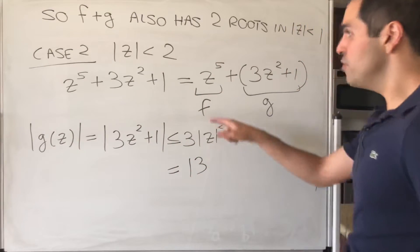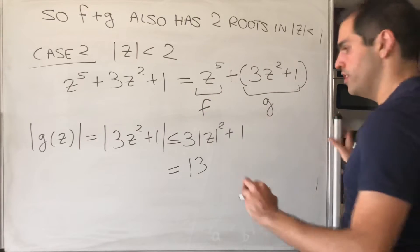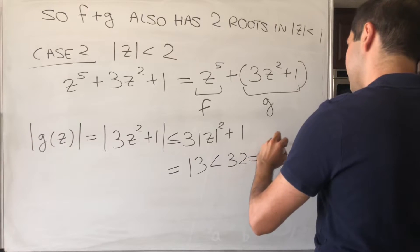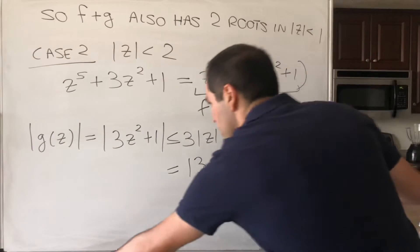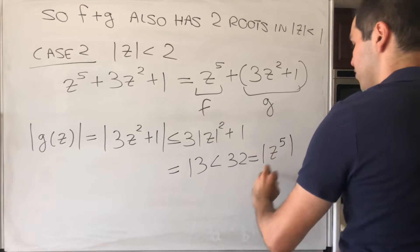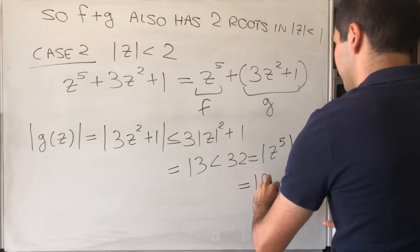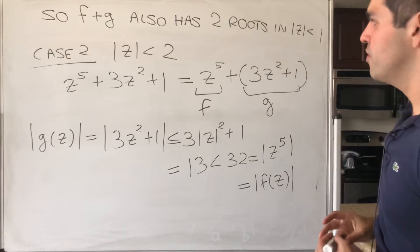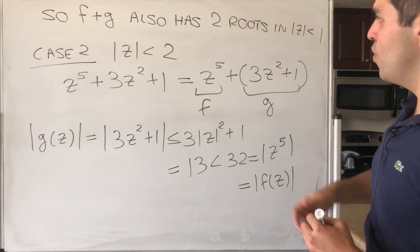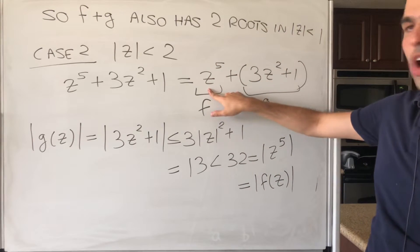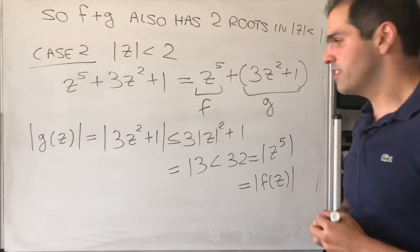Well, it is a big number, but it's smaller than 32, which is the absolute value of z^5. z^5, which is absolute value of F(z). So you see, this function is clearly bigger than this one in terms of absolute value. So again, the number of roots of this perturbation is just the number of roots of F, which in this case is 5.